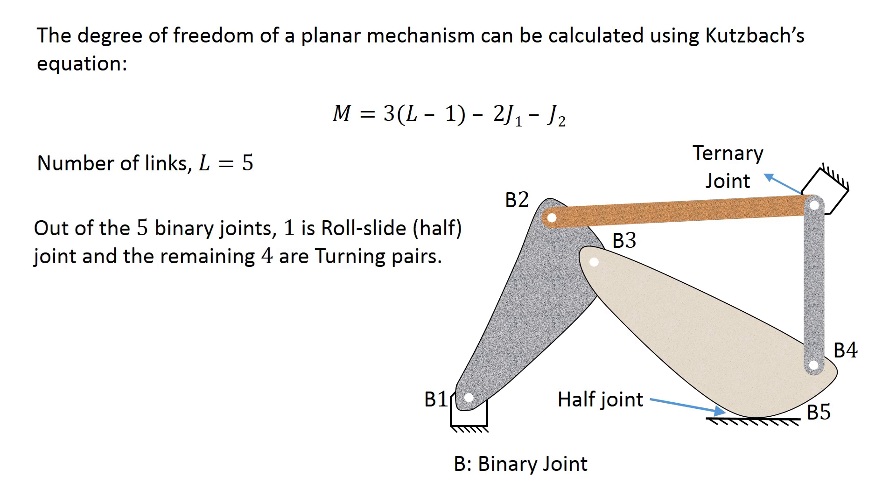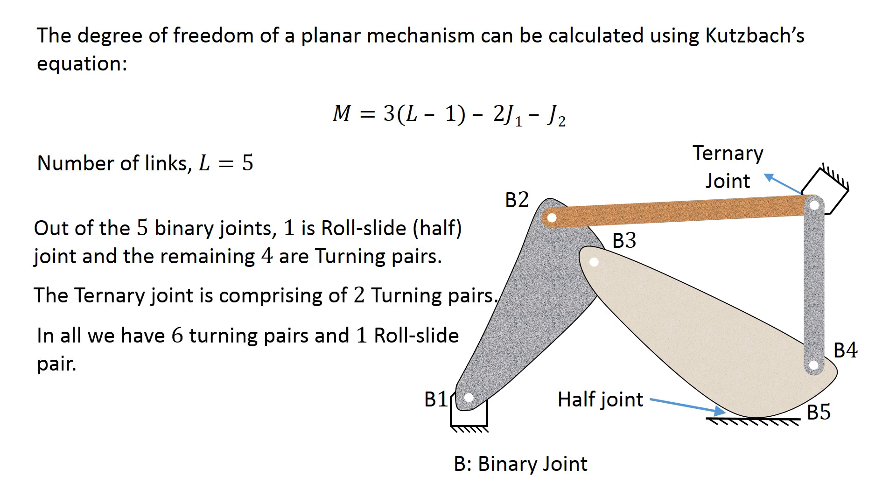Out of the 5 binary joints, 1 is roll-slide, that is half joint, and the remaining 4 are turning pairs. The ternary joint is comprising of 2 turning pairs. So in all we have 6 turning pairs each having 1 degree of freedom and 1 roll-slide pair having 2 degrees of freedom.